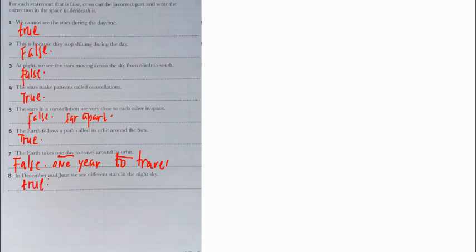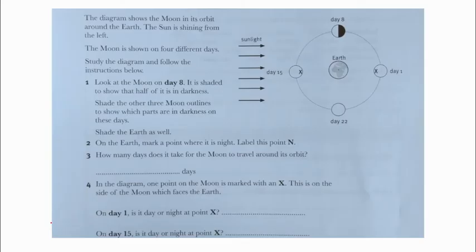Let's discuss Exercise 11.5. The diagram shows the moon in its orbit around the Earth. The sun is shining from the left and the moon is shown on four different days. Study the diagram and follow the instructions below. Look at the moon on day 8. It is shaded to show that half of it is in darkness.